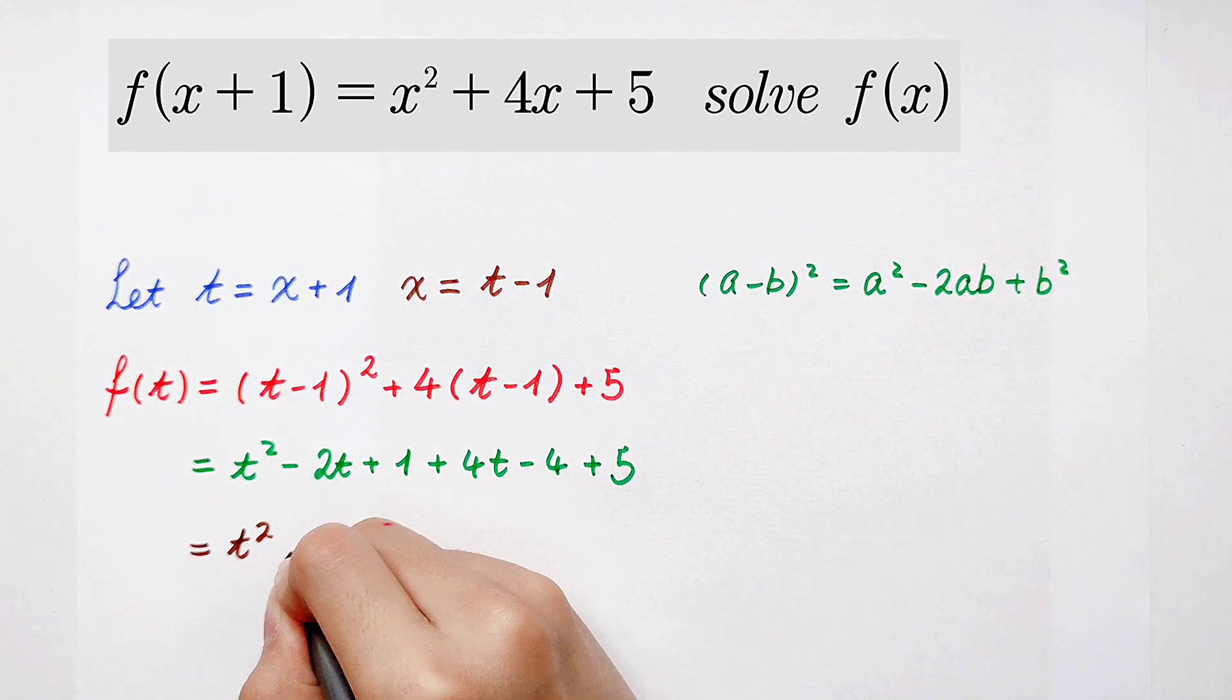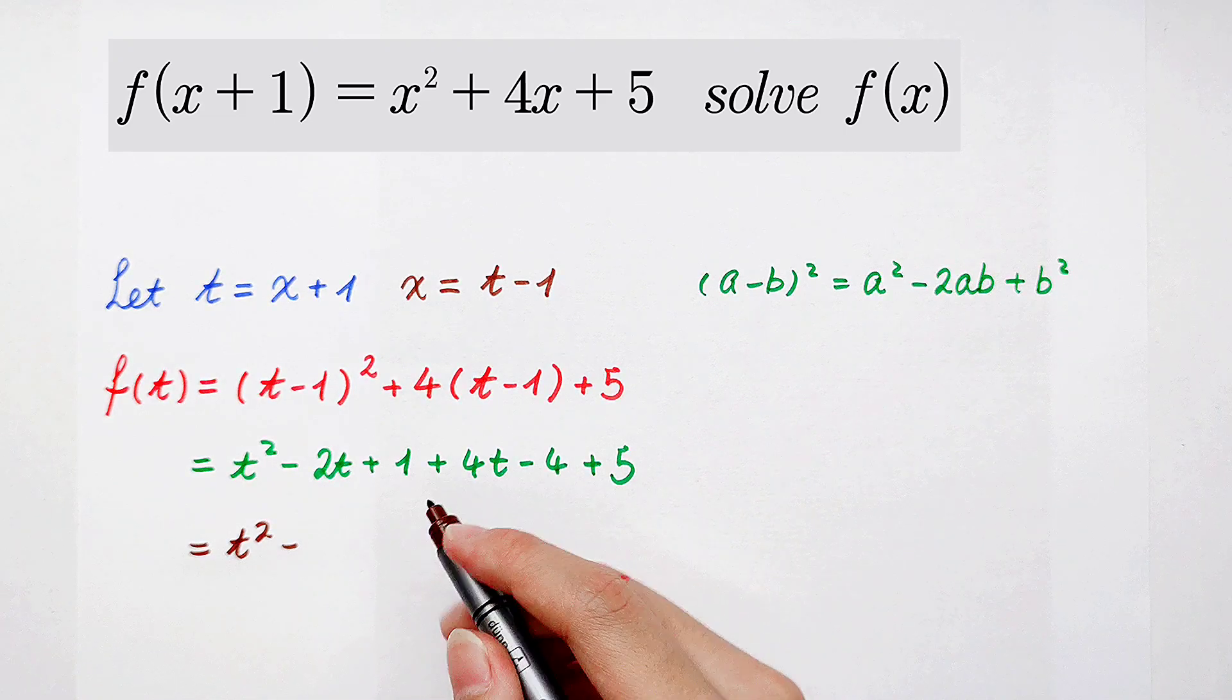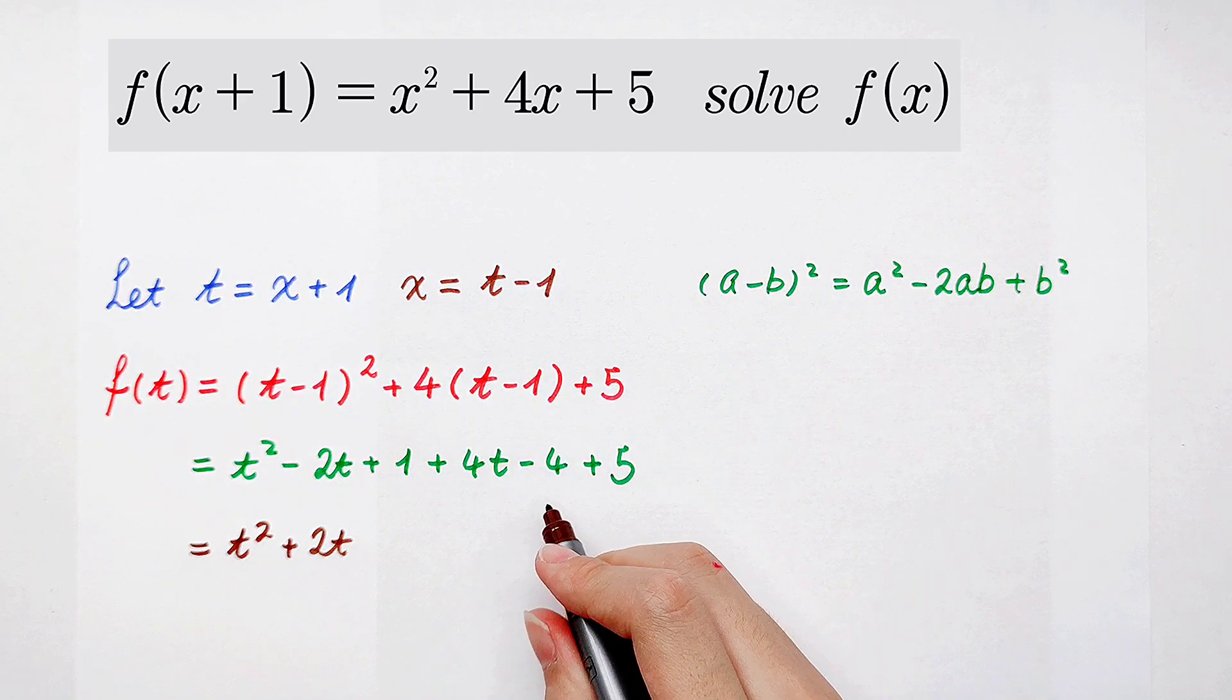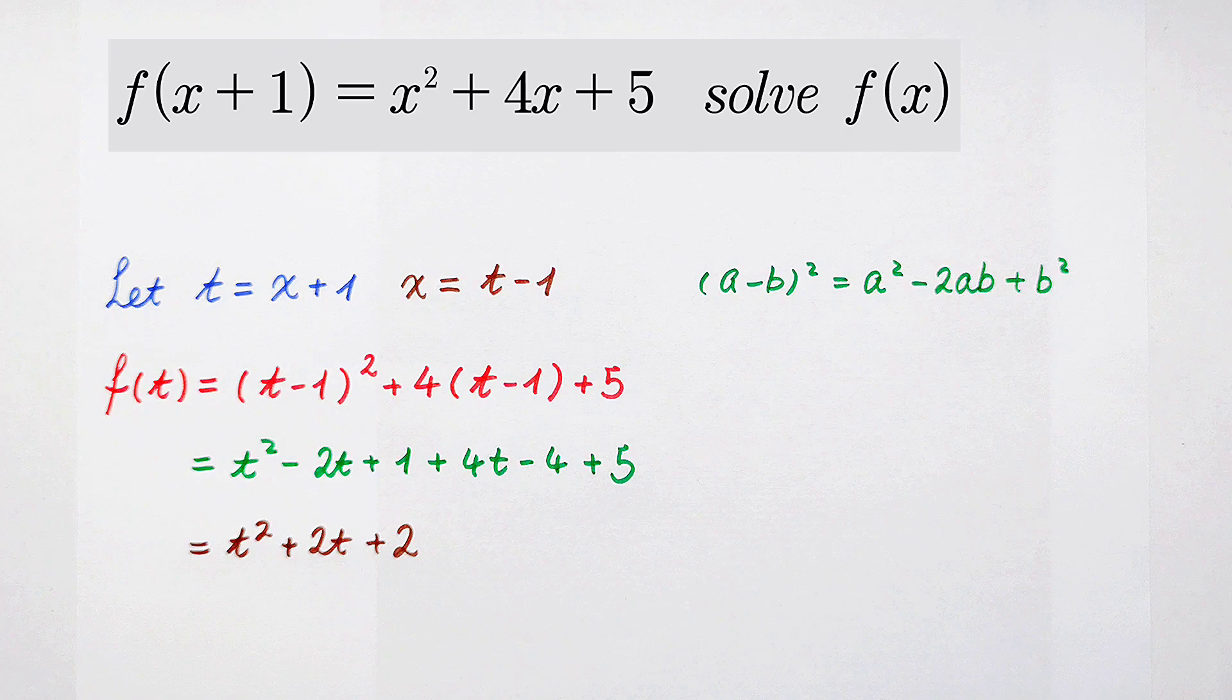It's t squared and then minus. Here is minus 2t and plus 4t, so it's positive 2t. And then plus 1 minus 4 is minus 3, and then plus 5 is plus 2.